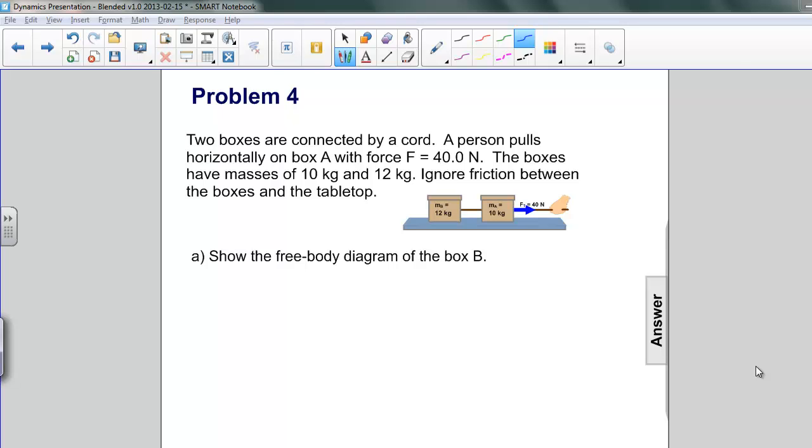Here in our first part of our example, we're asked to show the free body diagram for box B. Box B is the box here in the rear. I'm drawing a box around it, a square around it, and I want you to think of that as a picture frame. You can only see what's inside the picture frame. That's how we're going to develop our free body diagram. Everything outside of this box just doesn't matter.